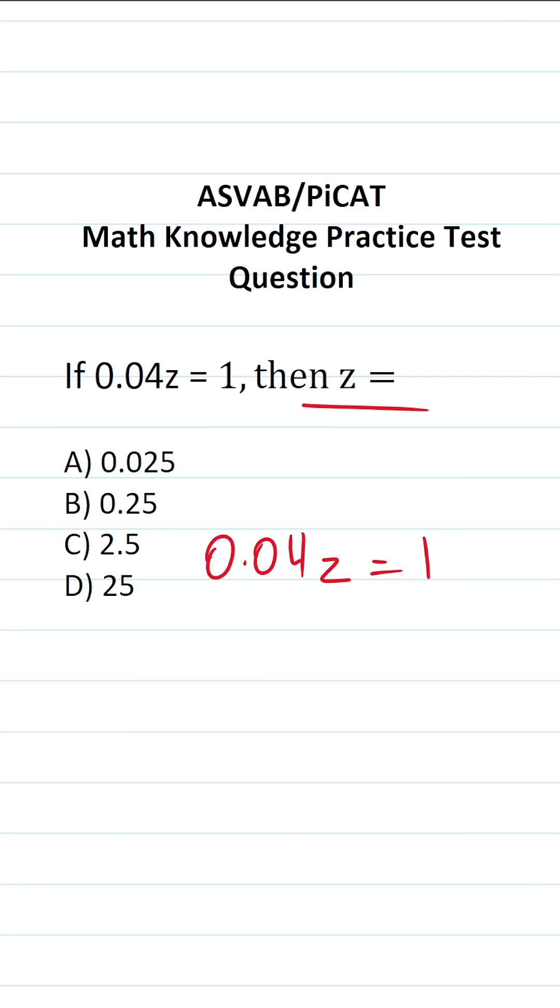In order to solve this equation for z, we have to get rid of 0.04 in front of it by dividing both sides of the equation by 0.04. In doing so, this crosses out, leaving us with z over here.